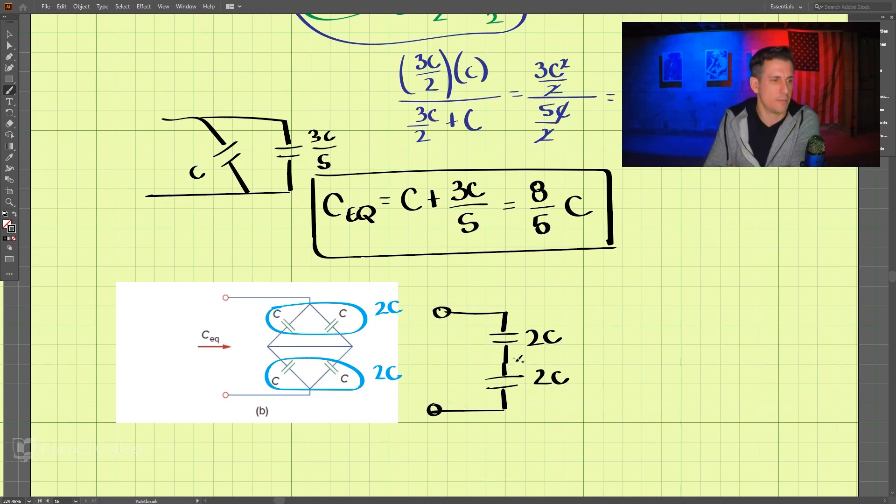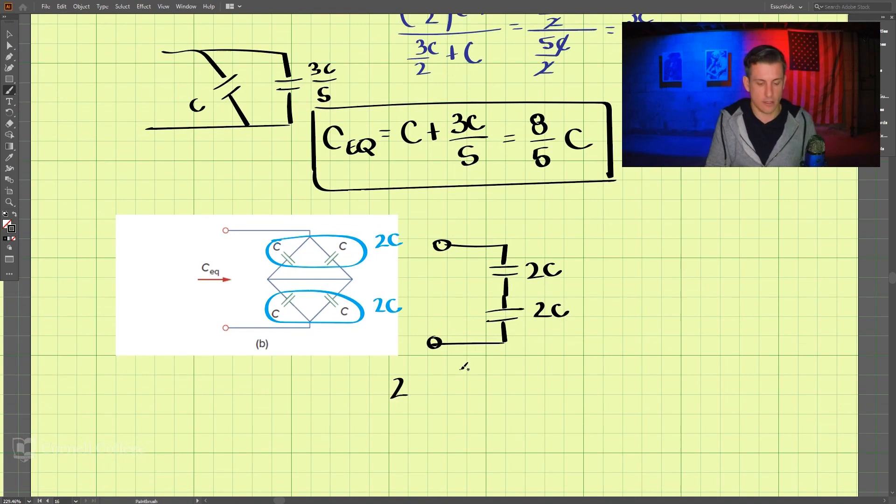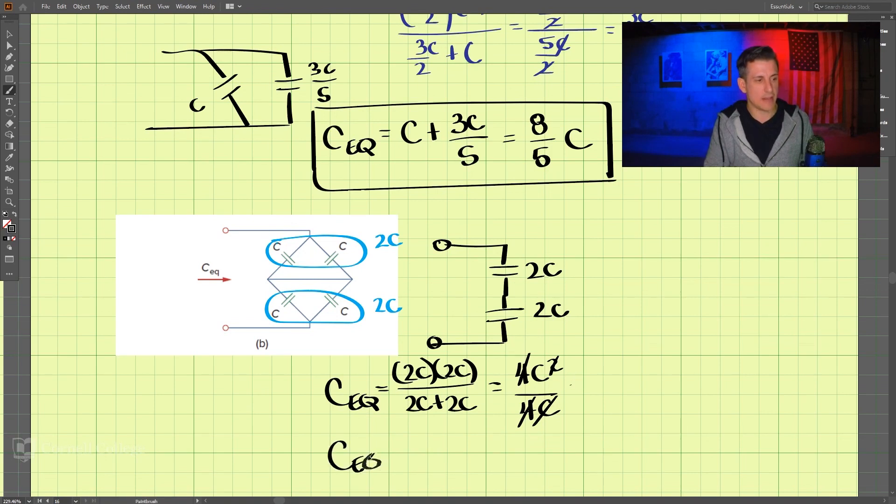And when we put them all together, these are in series with each other. So we can find the equivalent capacitance is equal to 2C times 2C divided by 2C plus 2C. That is 4C squared on top and 4C on the bottom. We can cancel the 4s and one of the C's here, and we get the equivalent capacitance is just equal to C. And that is our solution for 629 part B.